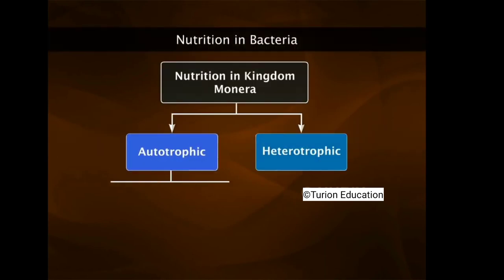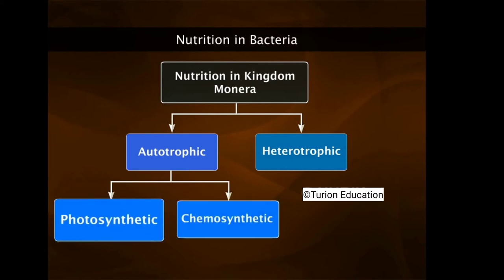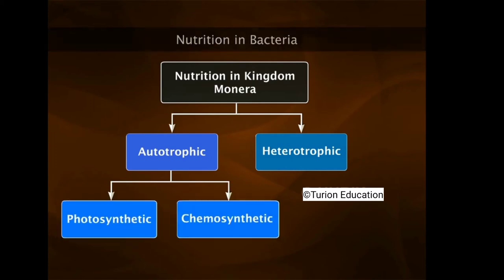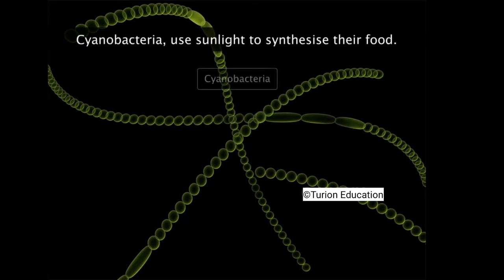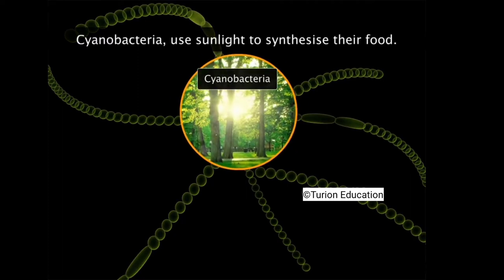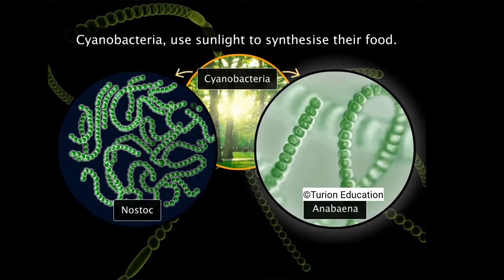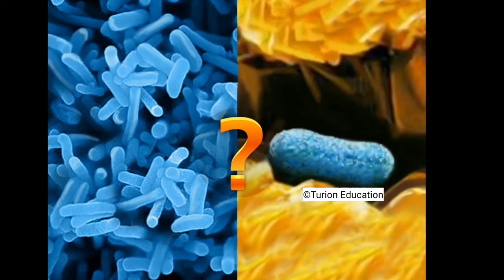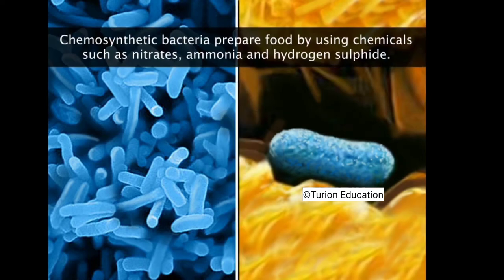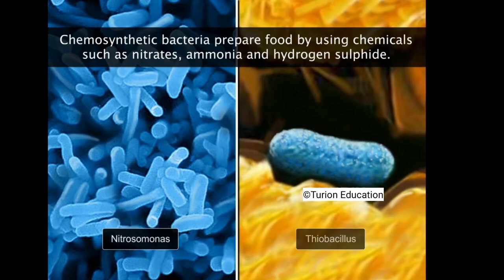Autotrophic bacteria prepare their own food through either photosynthesis or chemosynthesis. Photosynthetic monerans such as cyanobacteria or blue-green algae use sunlight to synthesize food — examples include Nostoc and Anabaena. Chemosynthetic bacteria such as Nitrosomonas and Thiobacillus prepare food by using chemicals like nitrates, ammonia, and hydrogen sulfide.